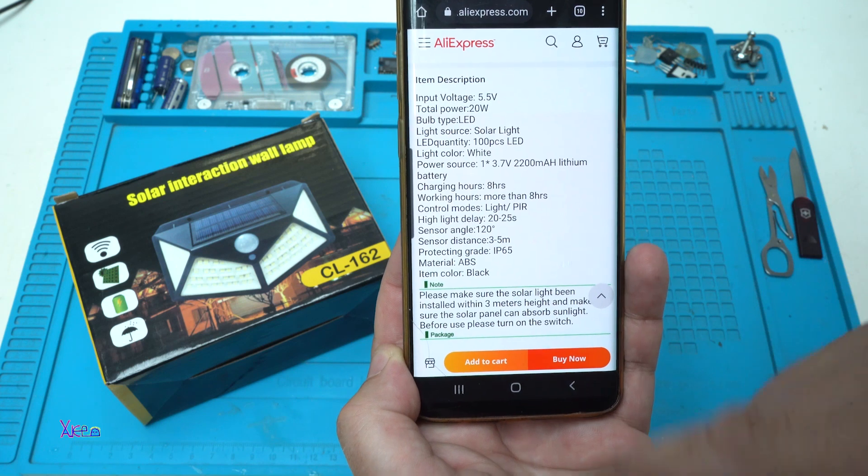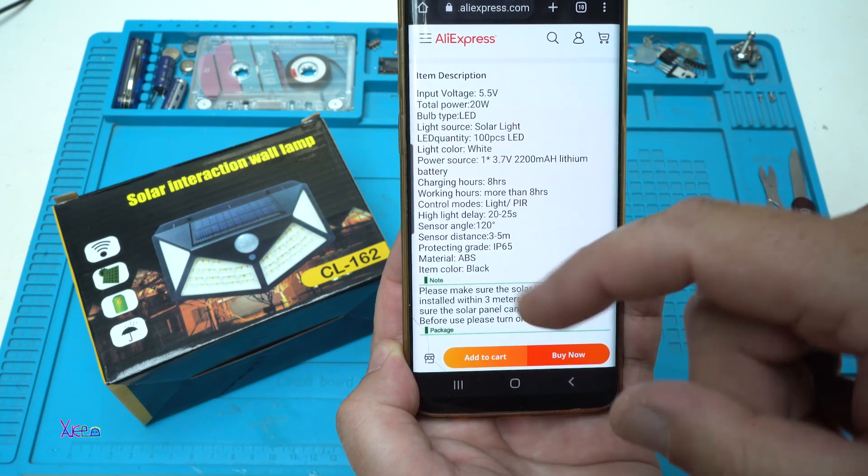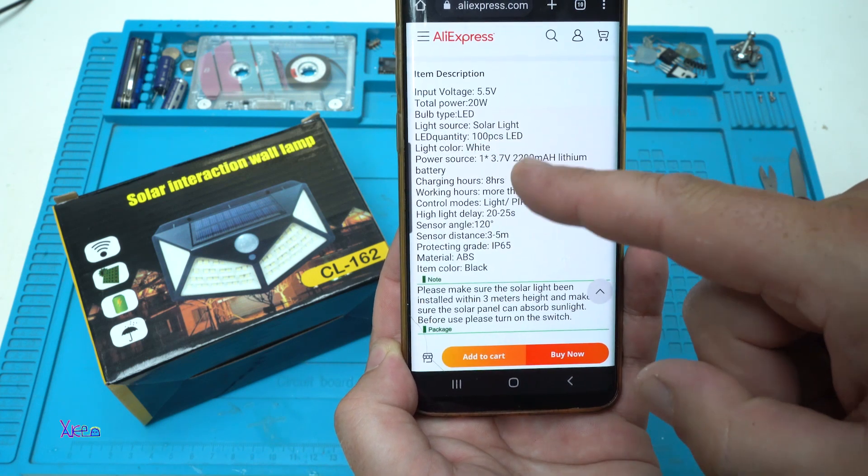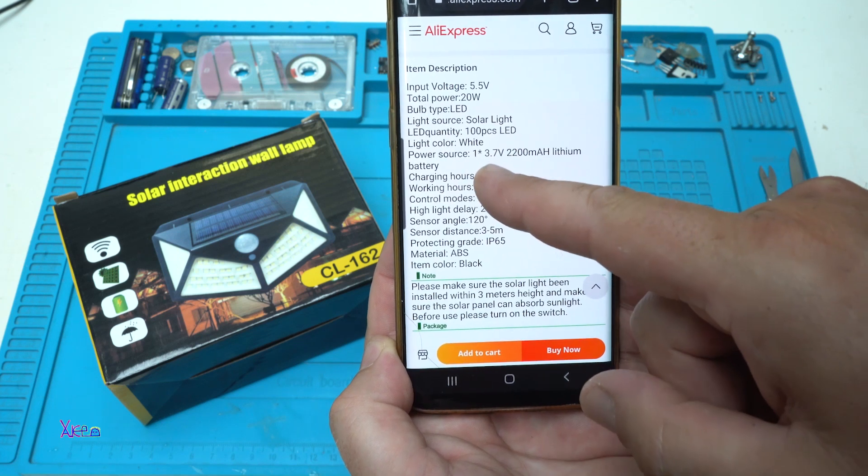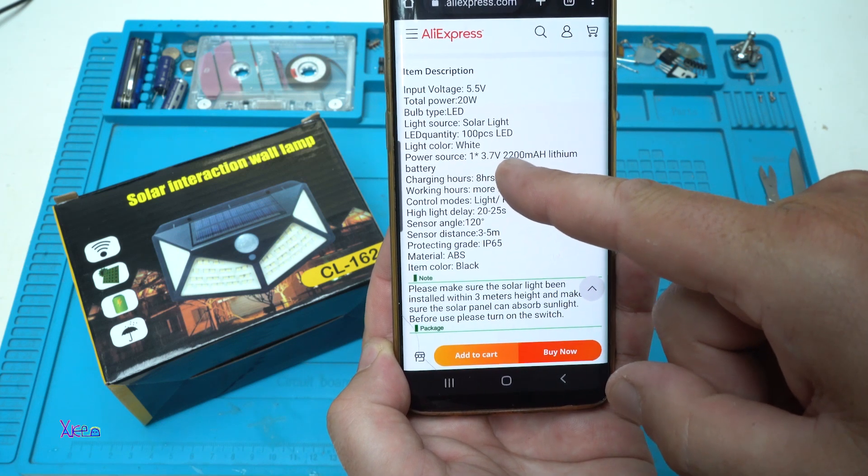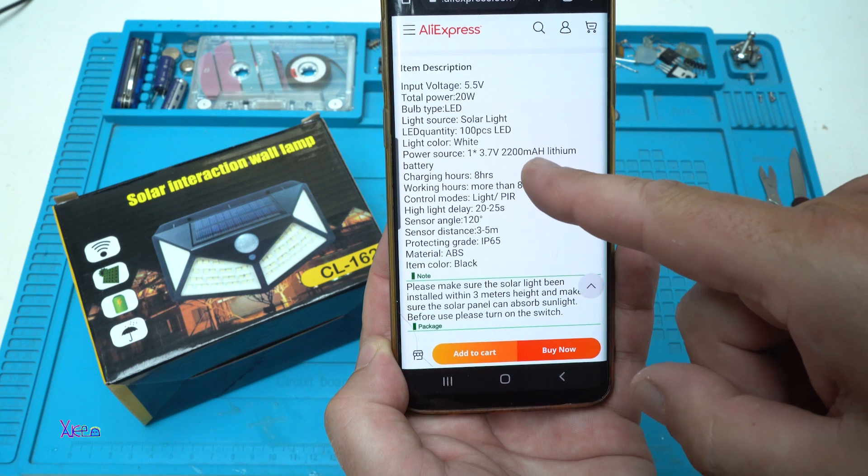Light source: solar LED. Quantity: 100 pieces. It says you have 2200 milliamp lithium battery.